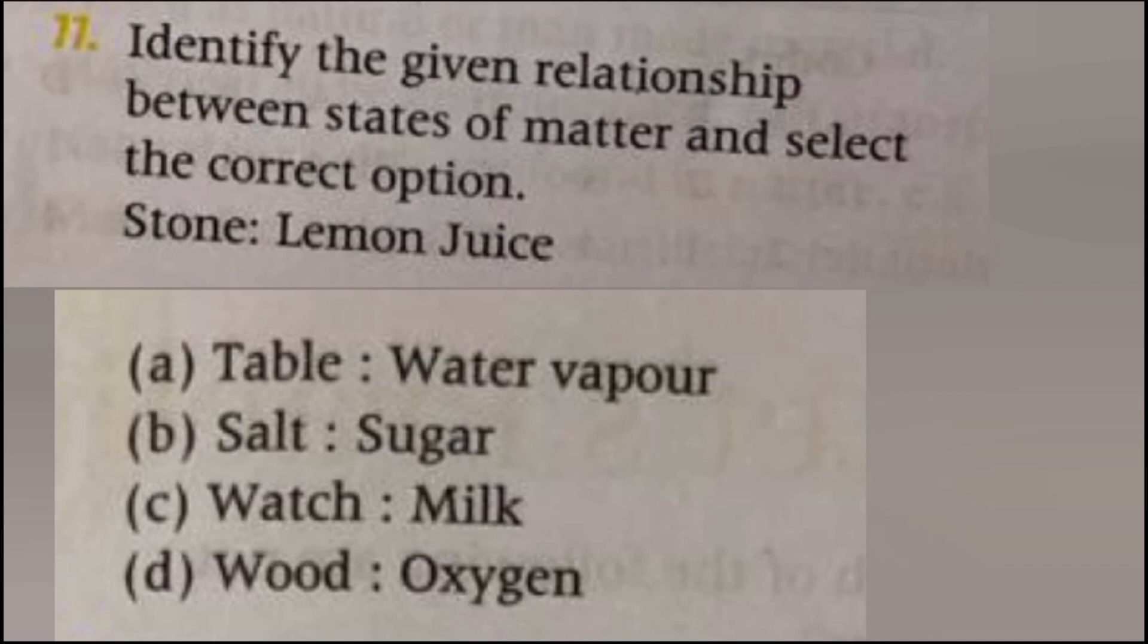Identify the given relationship between a state of matter and select the correct option. Stone, lemon juice, table, water wrapper, salt, sugar, watch, milk, wood, oxygen. The answer is C, watch and milk. In the above relations, stone is solid and lemon juice is liquid, so the answer is C, solid and liquid.